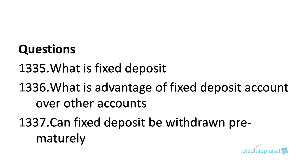The advantage is that the rate of interest banks pay on fixed deposits is comparatively more than a savings bank account. Savings accounts usually pay around 4 to 6 percent, whereas fixed deposits pay more than 7 to 8 percent depending on the tenure. Another question to be prepared: Can fixed deposits be withdrawn prematurely? Yes, they can be. Normally it is not allowed, but in case of emergency you can close it, though some charges will be deducted.